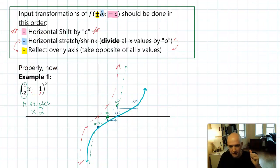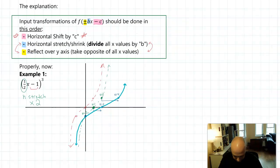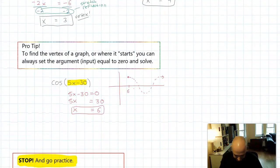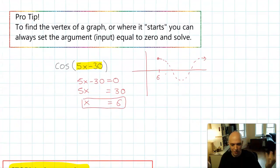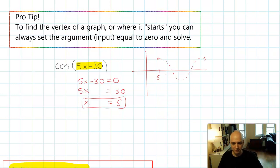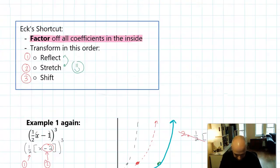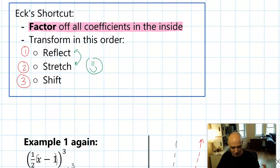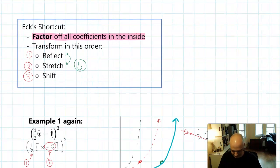To recap: the first big idea is that if you're doing transformations in the standard order, you should do horizontal shifts first, then horizontal stretches, then any reflections over the Y axis. The second big idea is that to find the vertex or starting point of a graph, you can set the argument equal to zero and solve — that will tell you where that point has transformed or moved to. Third, if you want a shortcut, you can try factoring the inside and changing the order to reflecting, stretching, and shifting. That's it for today. Please let me know what questions you have. Good luck on your practice problems, and I'll see you all next time.